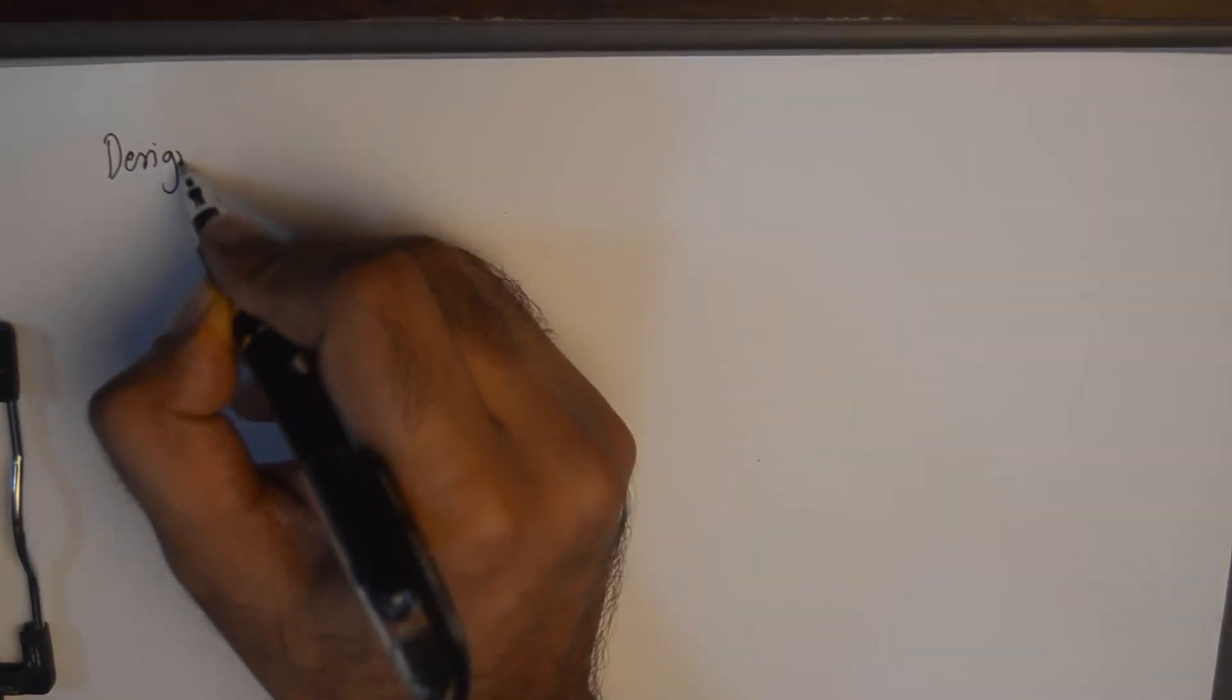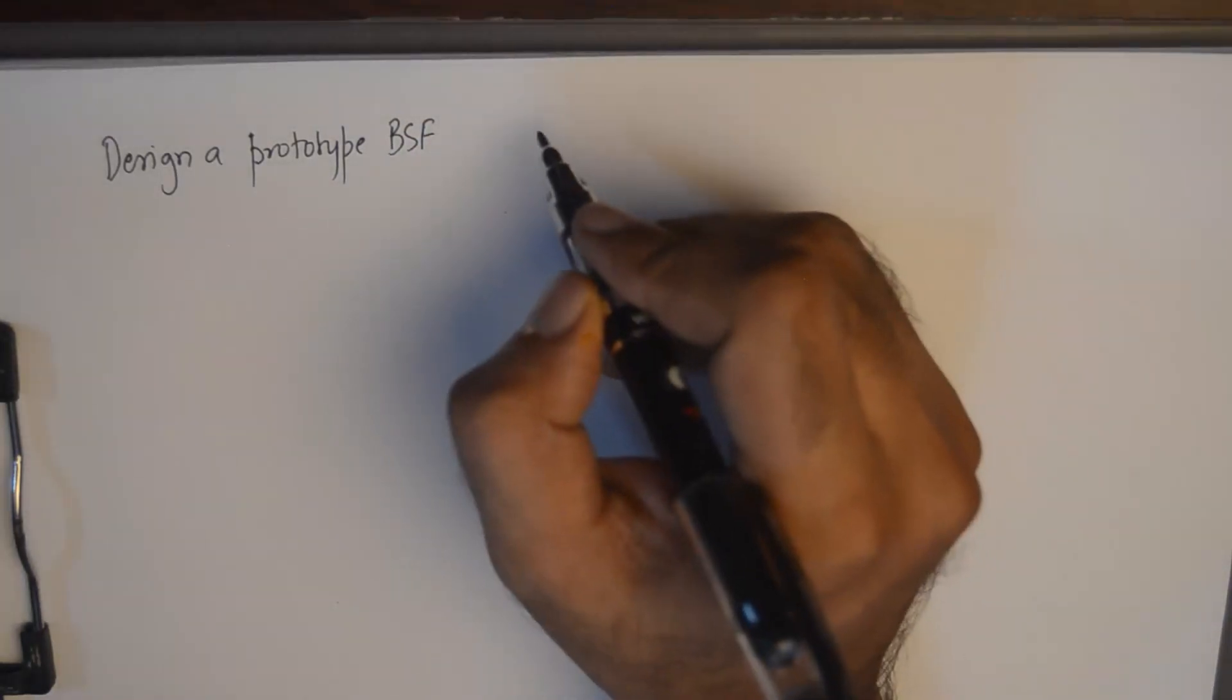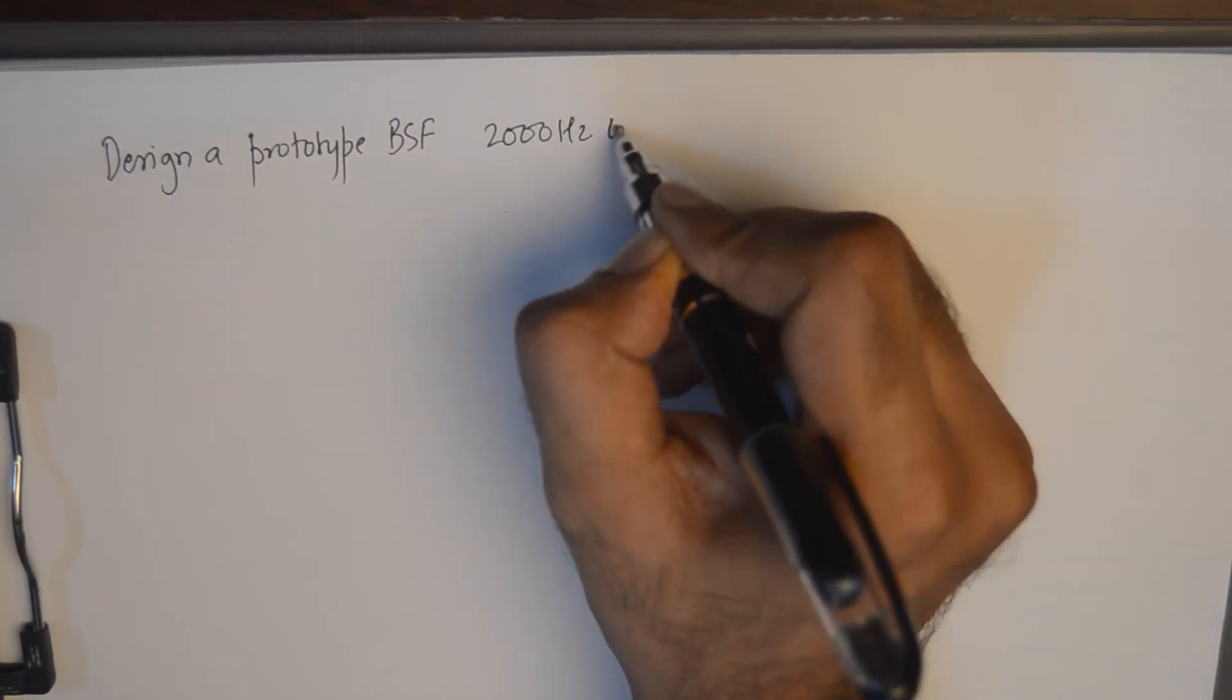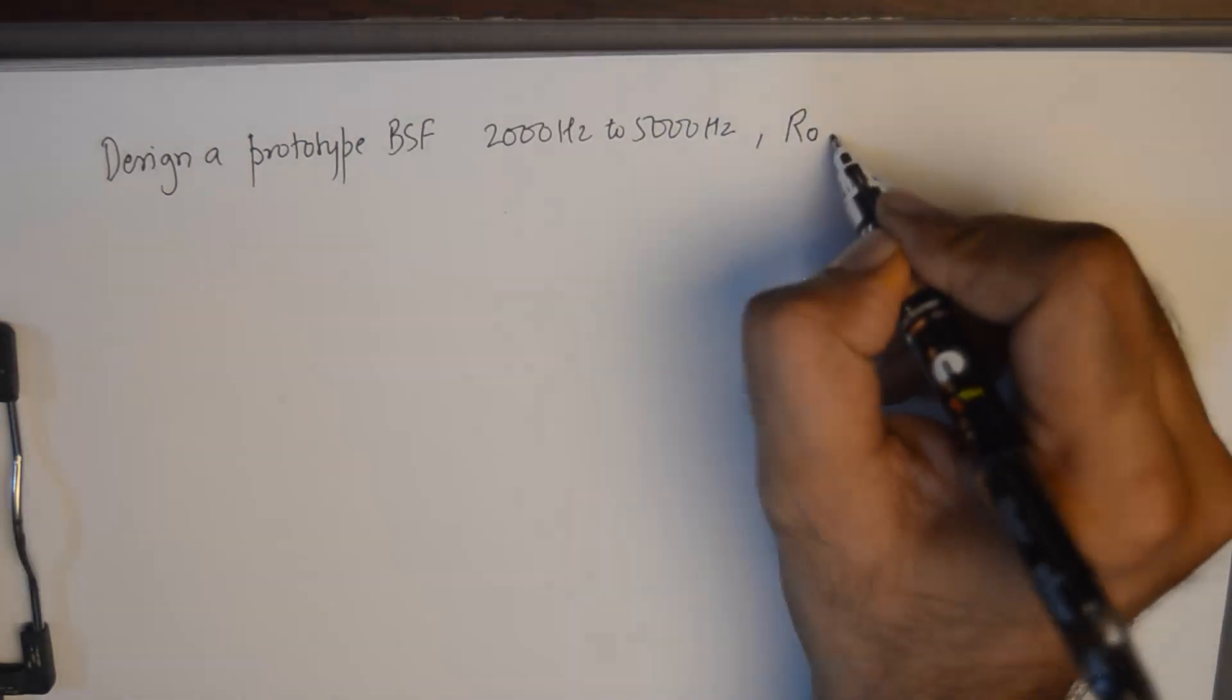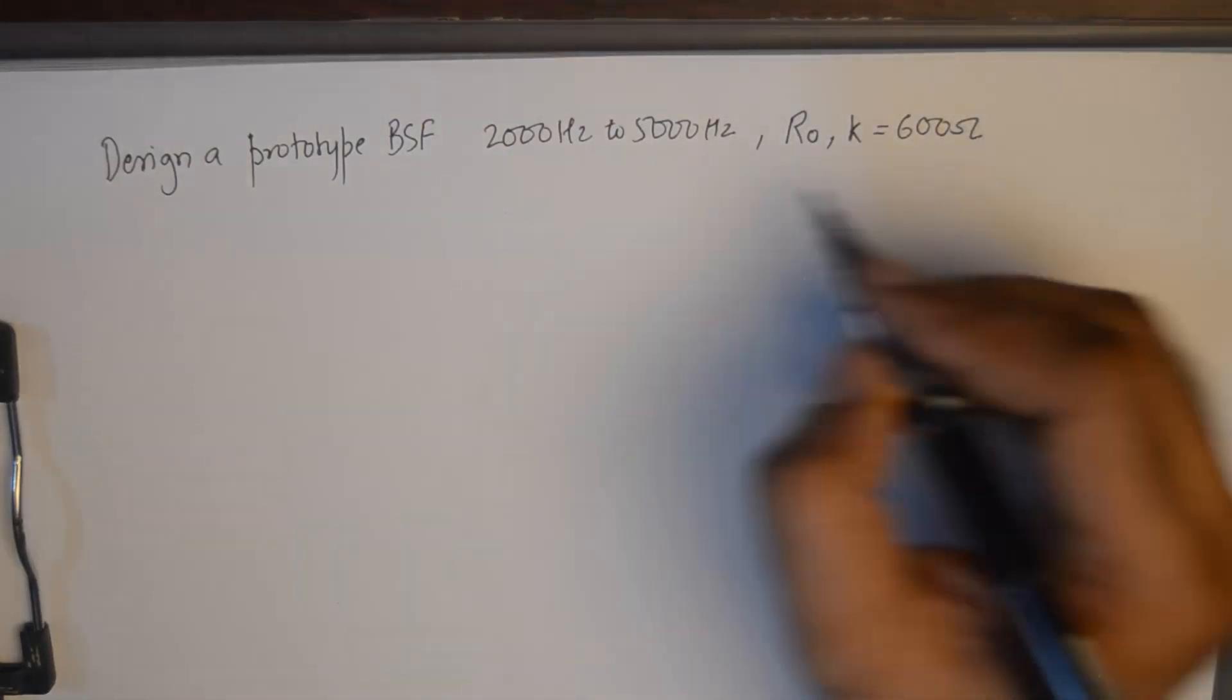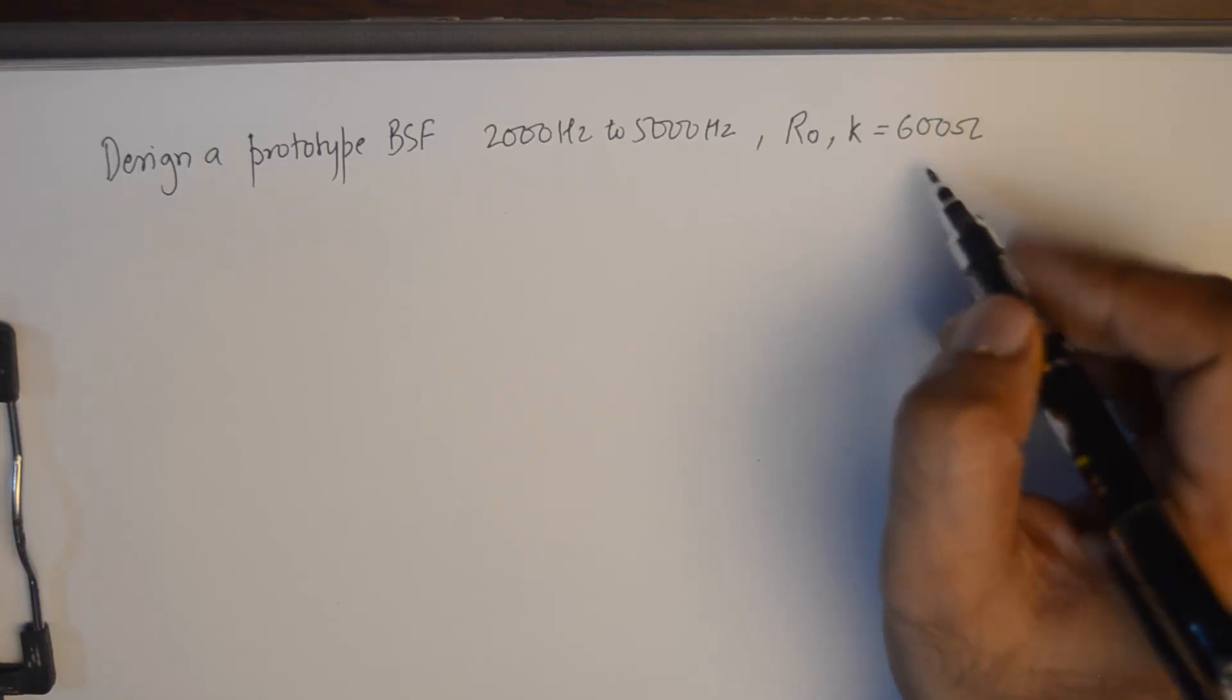This numerical says that we need to design a prototype band stop filter. And the cut-off frequencies are from 2000 Hz to 5000 Hz. And the design resistance R0 or K is 600 ohms.